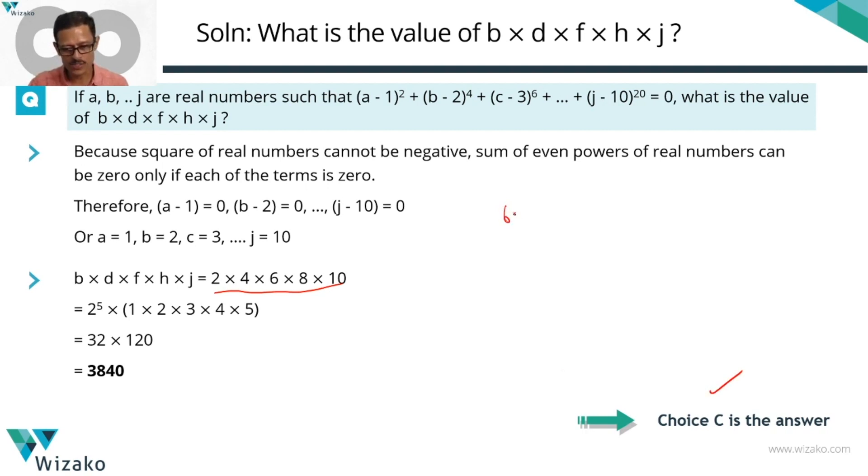Classify this one somewhere around 650, more for the fact that this expression looks a little daunting. Otherwise, conceptually, it's a very simple question. This gives an idea about how something we know—square of a real number cannot be negative—can be made into a question of this kind.